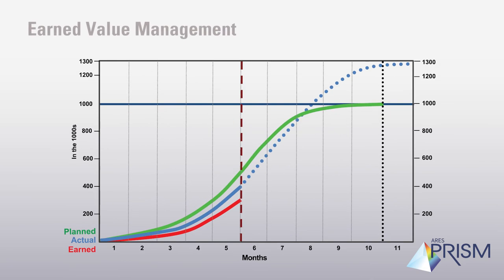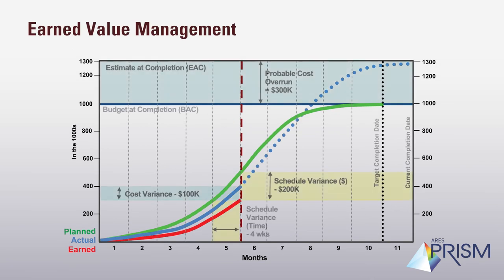Earned Value Management: You can calculate earned value management metrics. By measuring the historical performance of the project, earned value management forecasts the probability of a successful delivery. With Prism Cost, organizations can utilize progress measurement and track the cost and value of work.